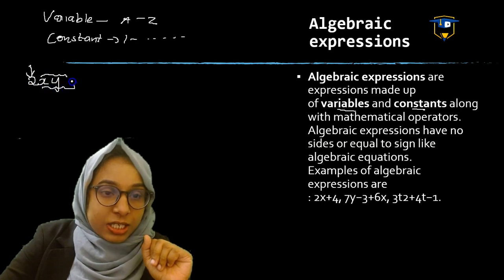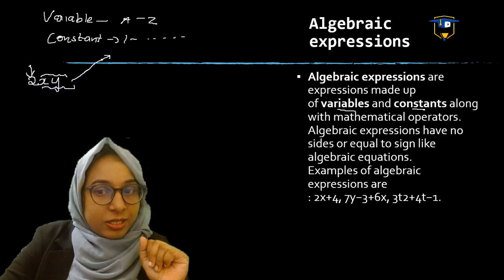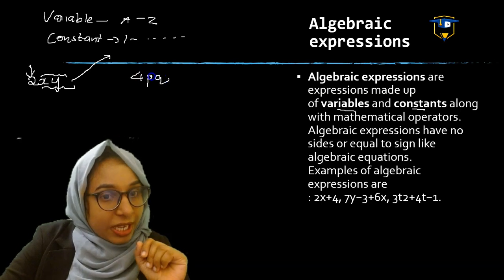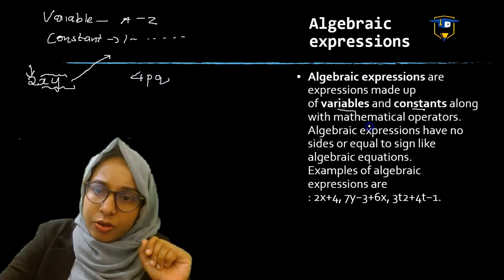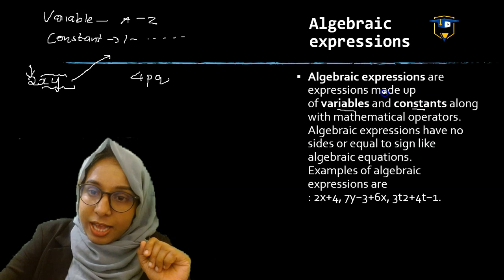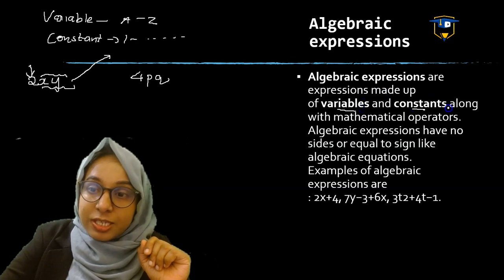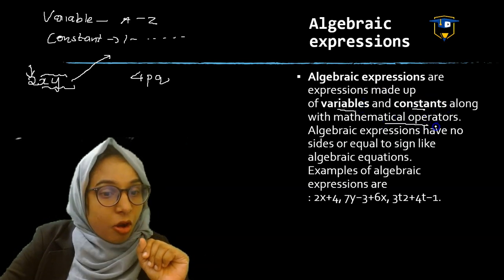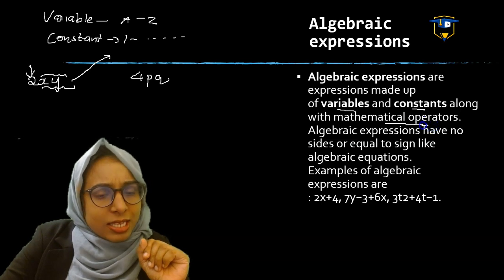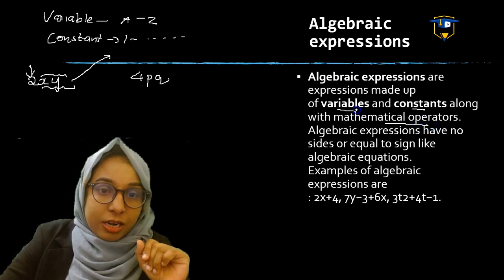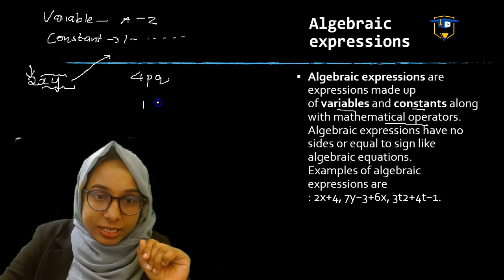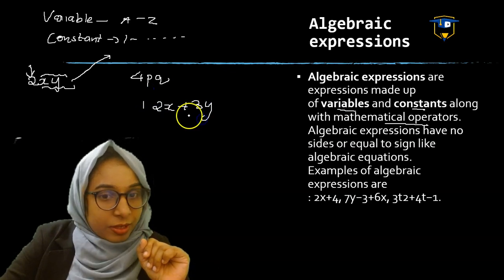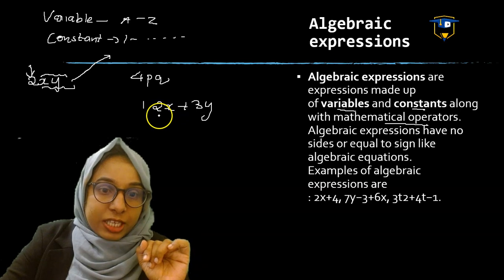Algebra Expressions can use any alphabets. For example, 4pq is also an Algebra Expression. Now, Algebra Expressions are made up of variables and constants along with mathematical operations. For example, 2x plus 3y — this is also an Algebra Expression.